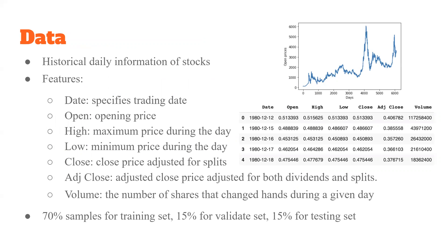The picture shows the trend of SHA stock price from 1980 to 2015. There are seven features, including date, open price, close price, maximum price, minimum price, adjusted close price, and volume of changed hands. As for the data pre-processing part, the data was split into three parts: 70% samples as training set, 15% validation set, and 15% as testing set.